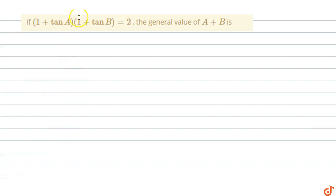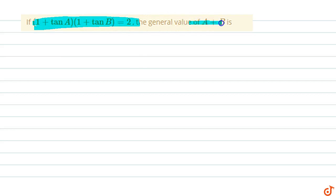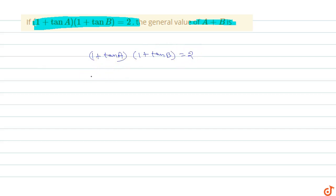In this question, if (1 + tan a) into (1 + tan b) equals 2, then find the general value of a plus b. So we have (1 + tan a)(1 + tan b) = 2. Multiplying it out: 1 + tan a + tan b + tan a · tan b equals 2.